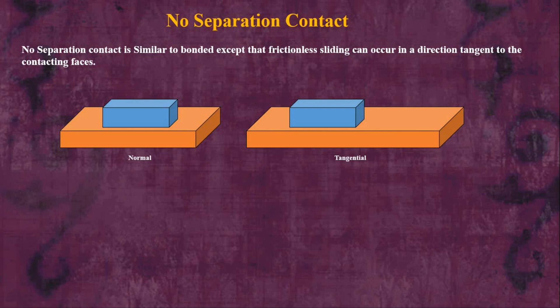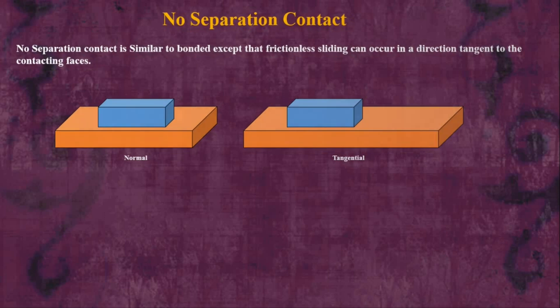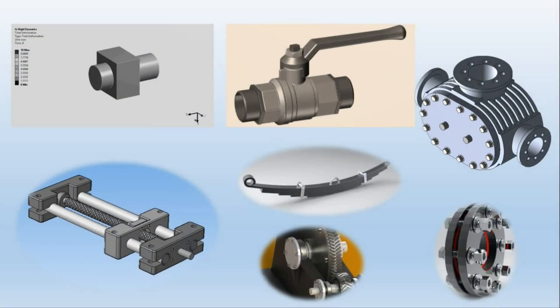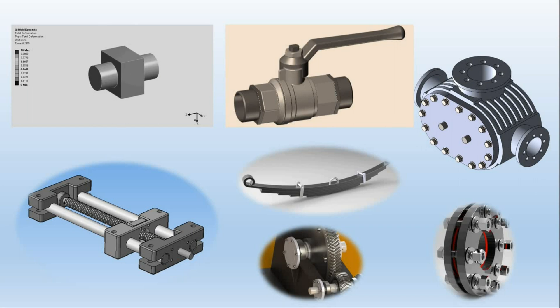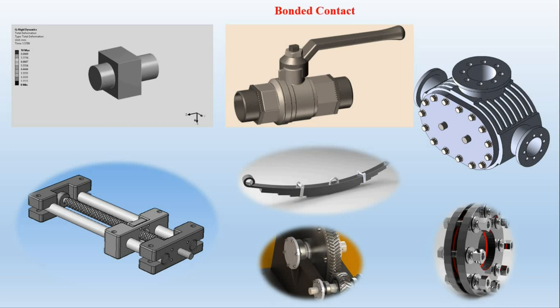So those are the five major types of contacts. Now let's discuss a few practical examples of where we can use these contact types. This slide presents practical examples where we can define different types of contacts. Let's start with linear contact — first the bonded contact.